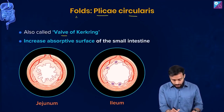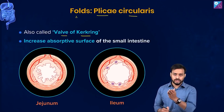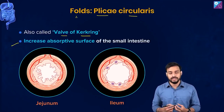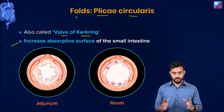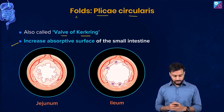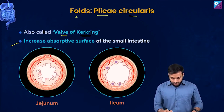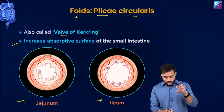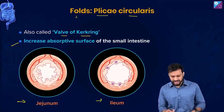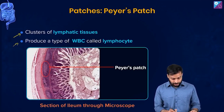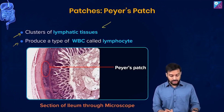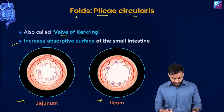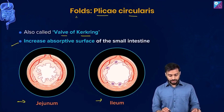Now let's talk about the folds, known as plicae circulares — also called the valve of Kerckring folds. Their function is to increase the surface area for absorption in the small intestine. Note the difference: in the jejunum the plicae circulares are very prominent, whereas in the ileum they are not as prominent. In the ileum, what is prominent instead are the Peyer's patches.